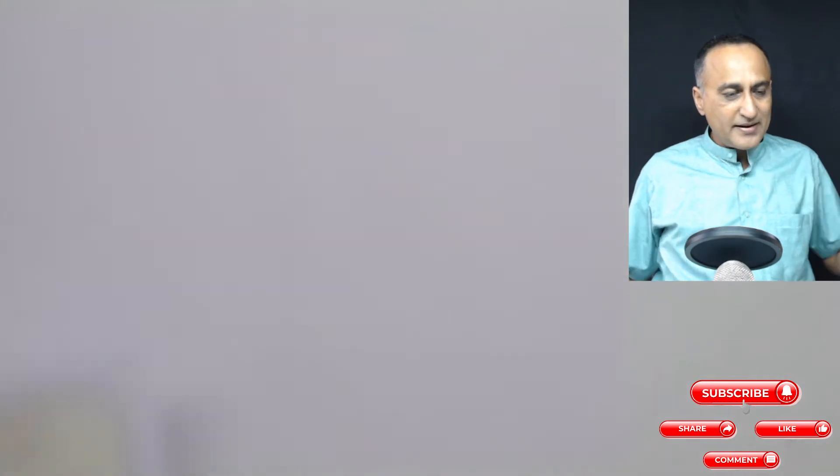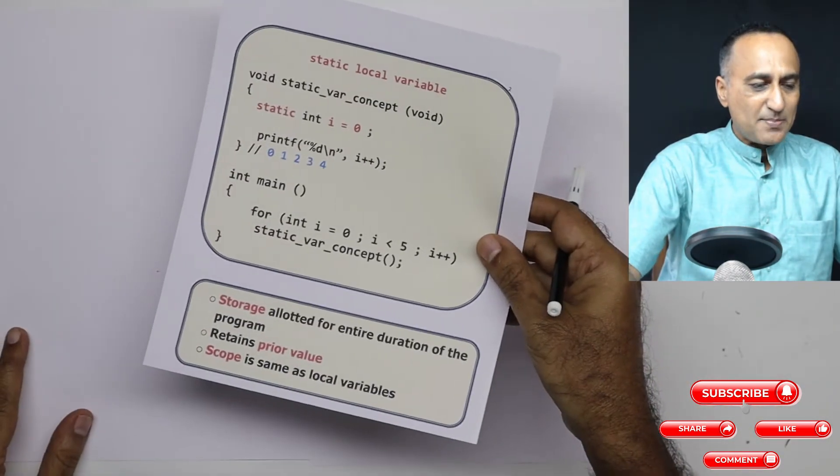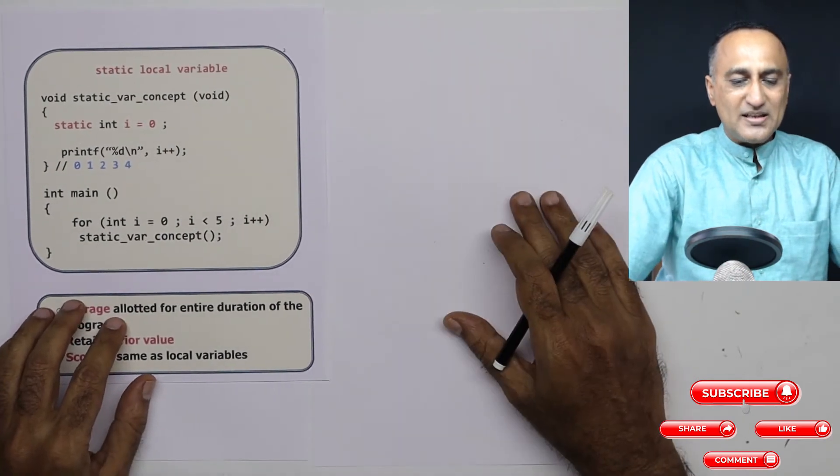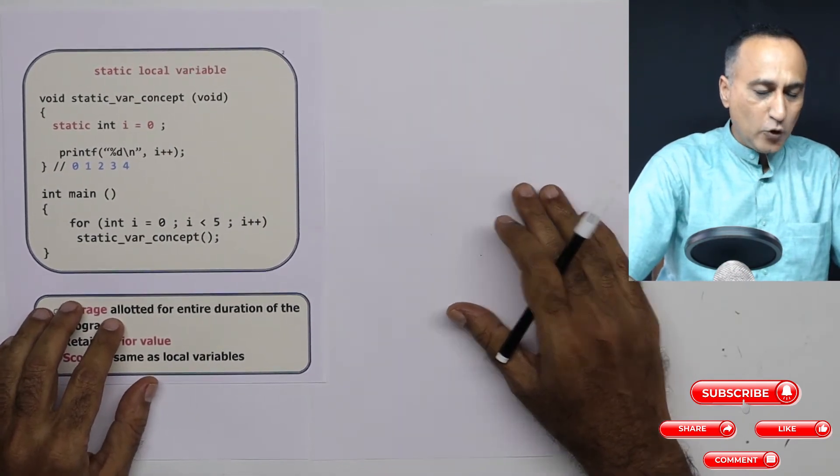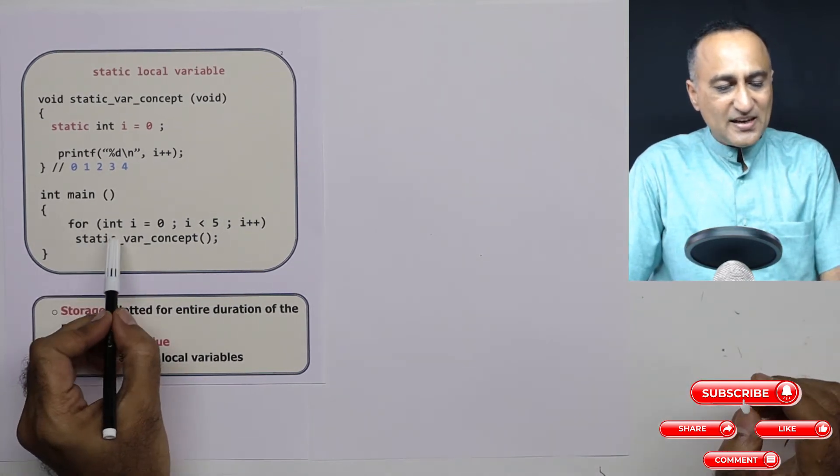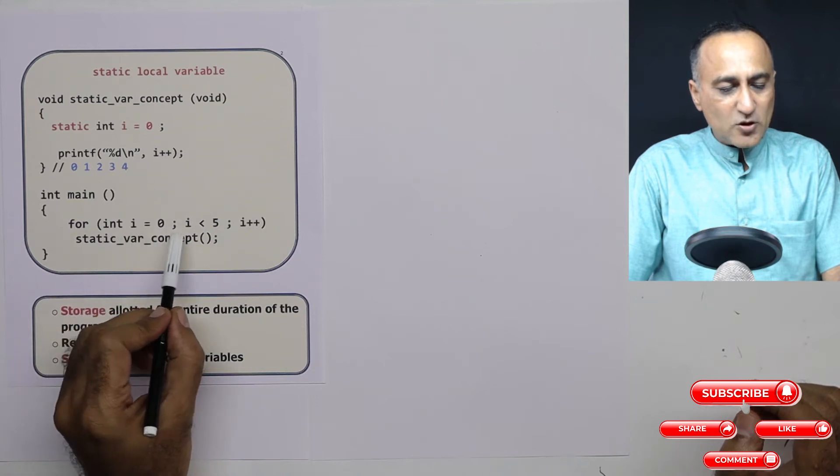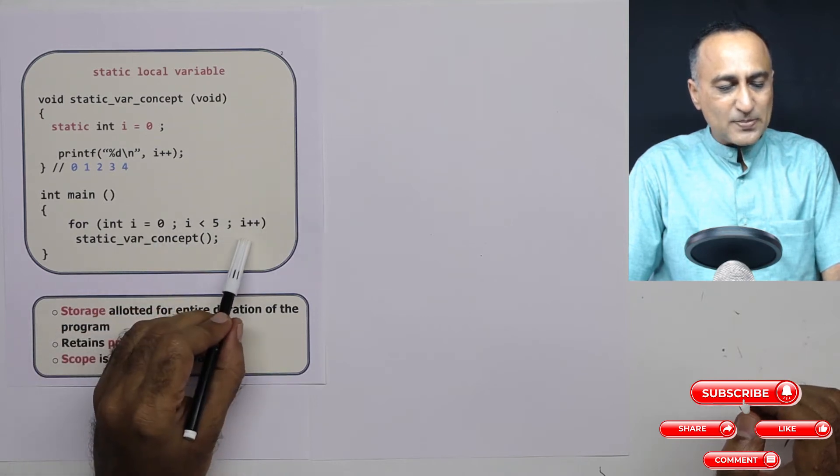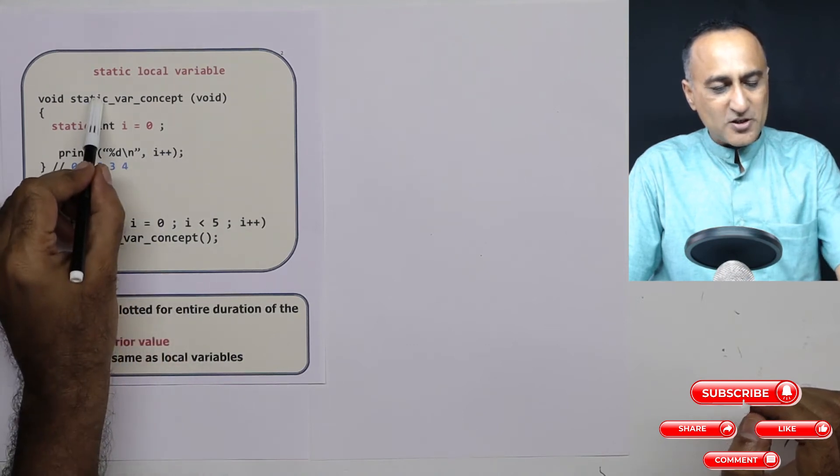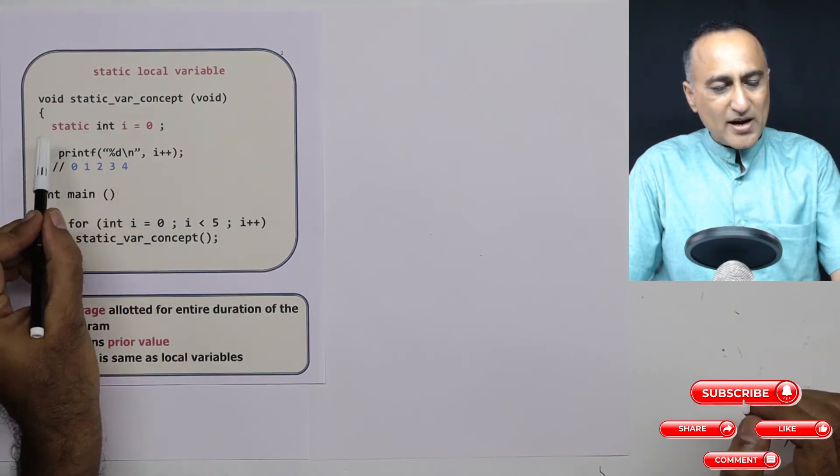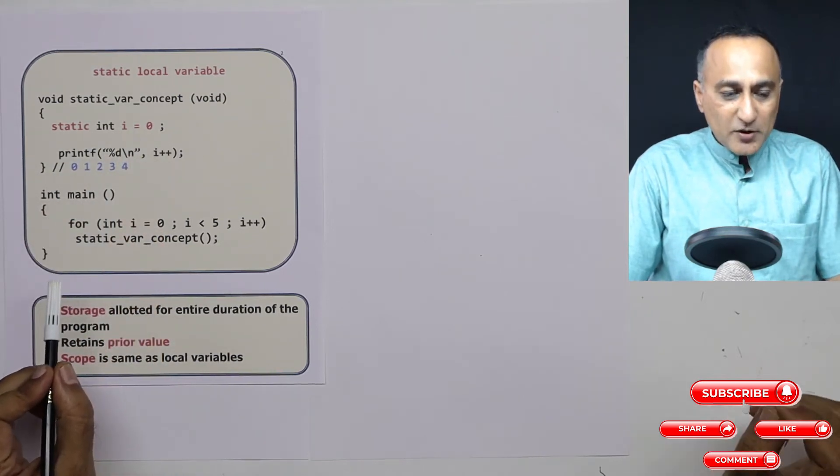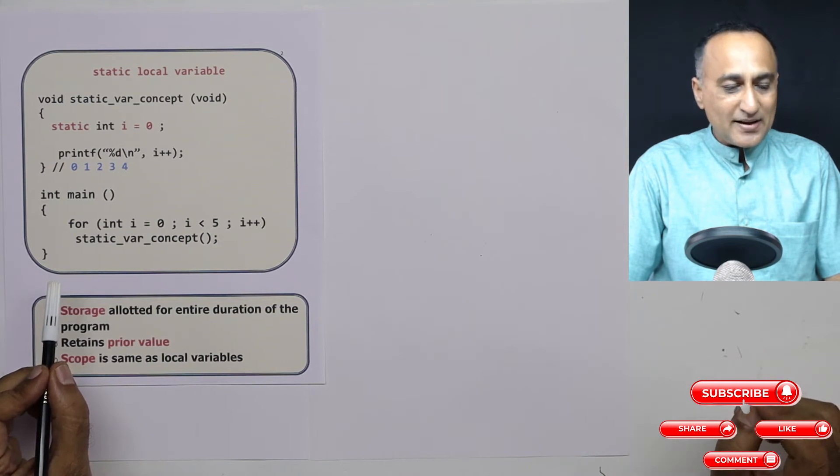Now what we shall do is we shall try to take a look at the next type of variable and try to understand what it really means. So the next type of variable is known as the static variable or the static local variable. So what I have done is I have created a function where I am saying int i equals zero, i less than five, i plus plus, and I am calling this a static_var_concept function. And here also I have defined a variable static int i equals zero.